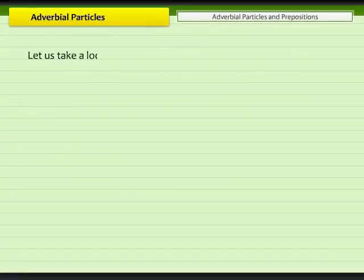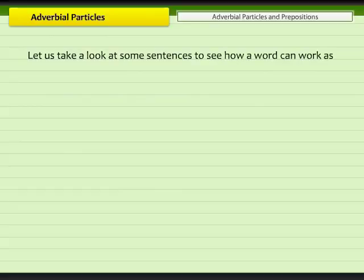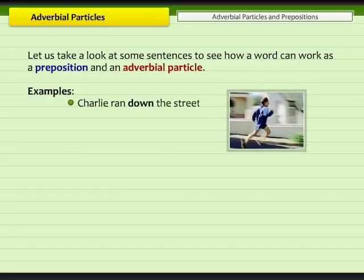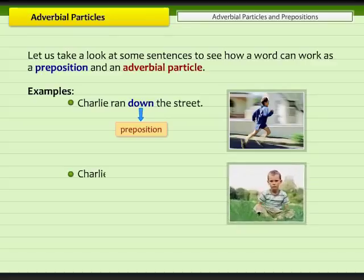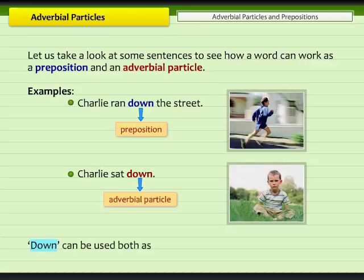Let us take a look at some sentences to see how a word can work as a preposition and an adverbial particle. For example, 'Charlie ran down the street.' In this sentence, 'down' acts as a preposition. Now look at the next example: 'Charlie sat down.' Here, 'down' acts as an adverb. Therefore, it is an adverbial particle. So, the word 'down' can be used both as a preposition and an adverbial particle depending on the context.